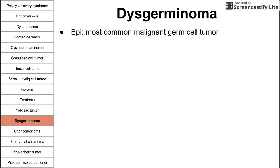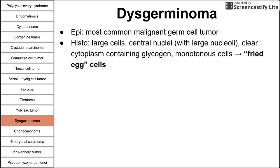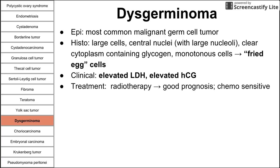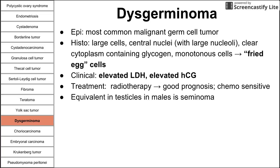Next is dysgerminoma, the most common malignant germ cell tumor. On histology, you see large cells with central nuclei, often with large nucleoli, clear cytoplasm containing glycogen, and monotonous cells that all look similar — described as fried egg cells. Clinically, two serum markers are associated: high LDH and high HCG. Treatment is radiotherapy and chemotherapy, with a good prognosis as they are sensitive to chemotherapy. The male equivalent is seminoma in the testicles.